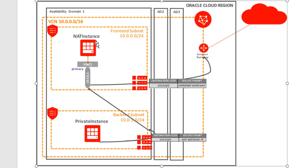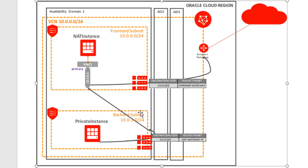But it didn't scale. The reason it didn't scale is because in order for this whole thing to work, you needed to update the security list, update the route table, and maintain them. Anything changing here would have needed to be modified in the security list and the route table. So it was not scalable.